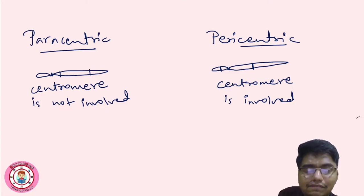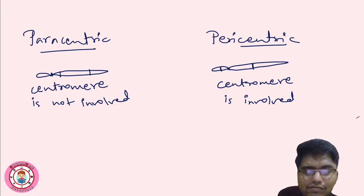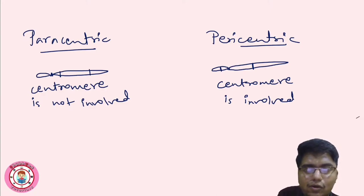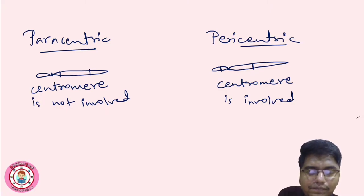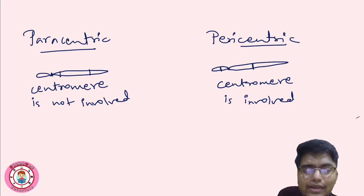During cell division, let's see how chromosomes behave when there is inversion. Also, there are terms like homozygous and heterozygous in inversion — it may be homozygous paracentric, homozygous pericentric, heterozygous paracentric, or heterozygous pericentric.